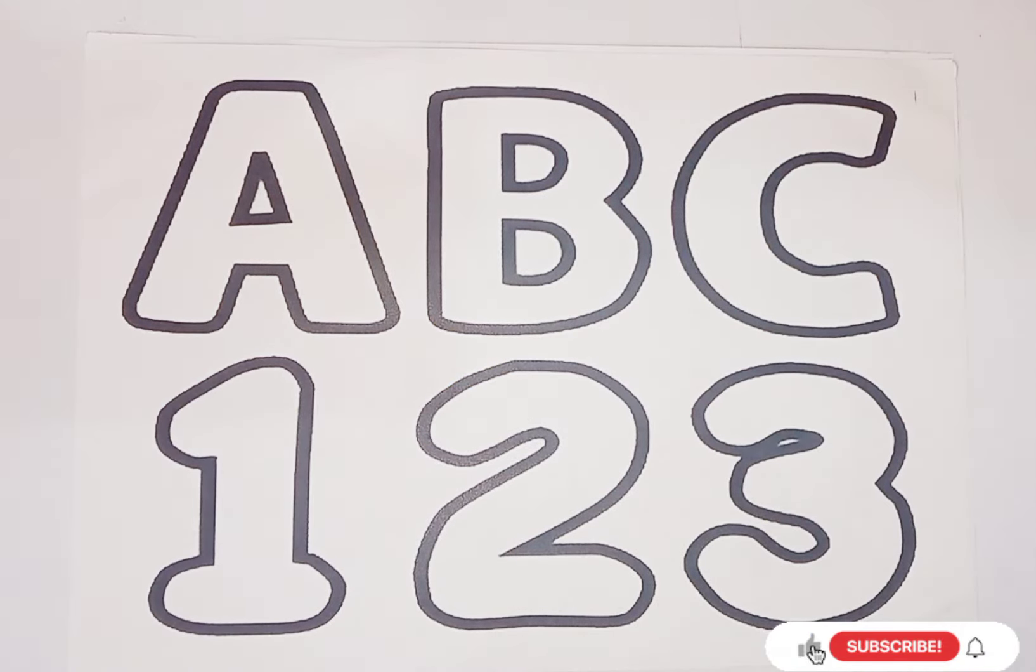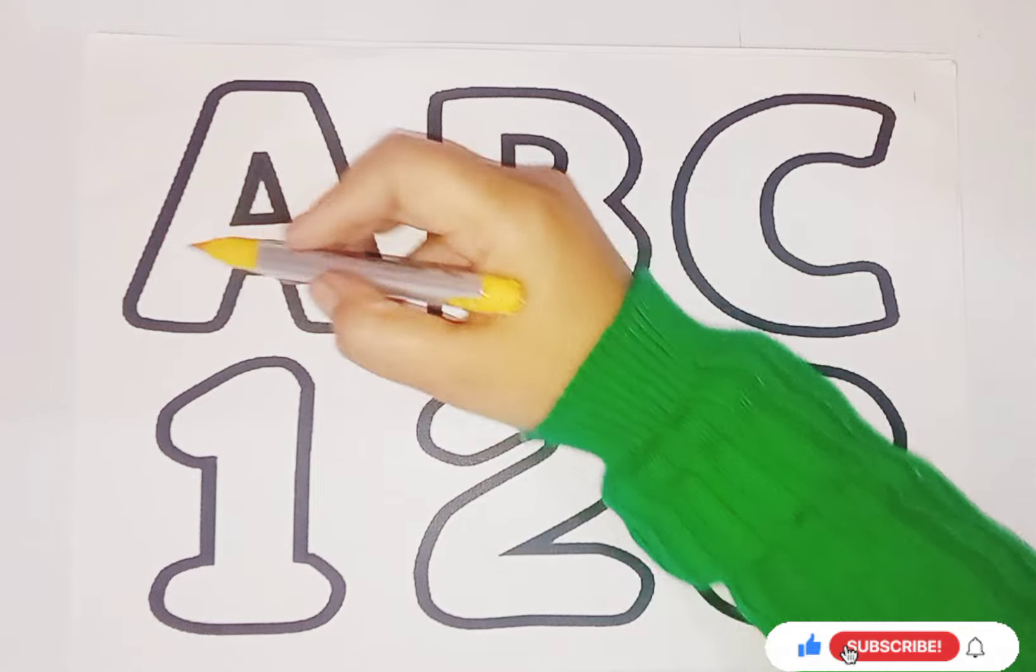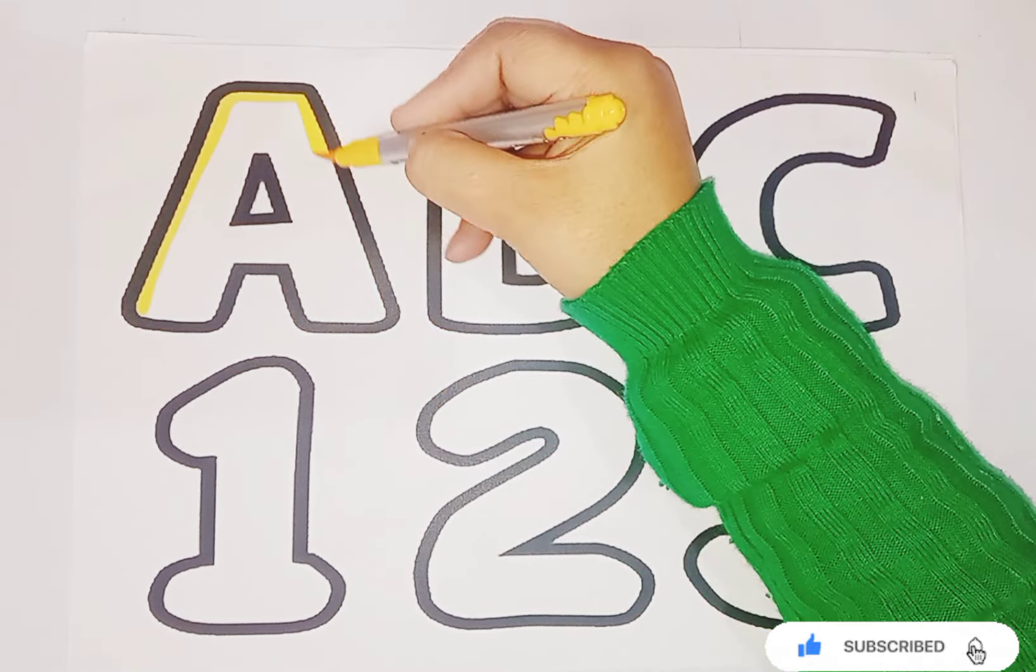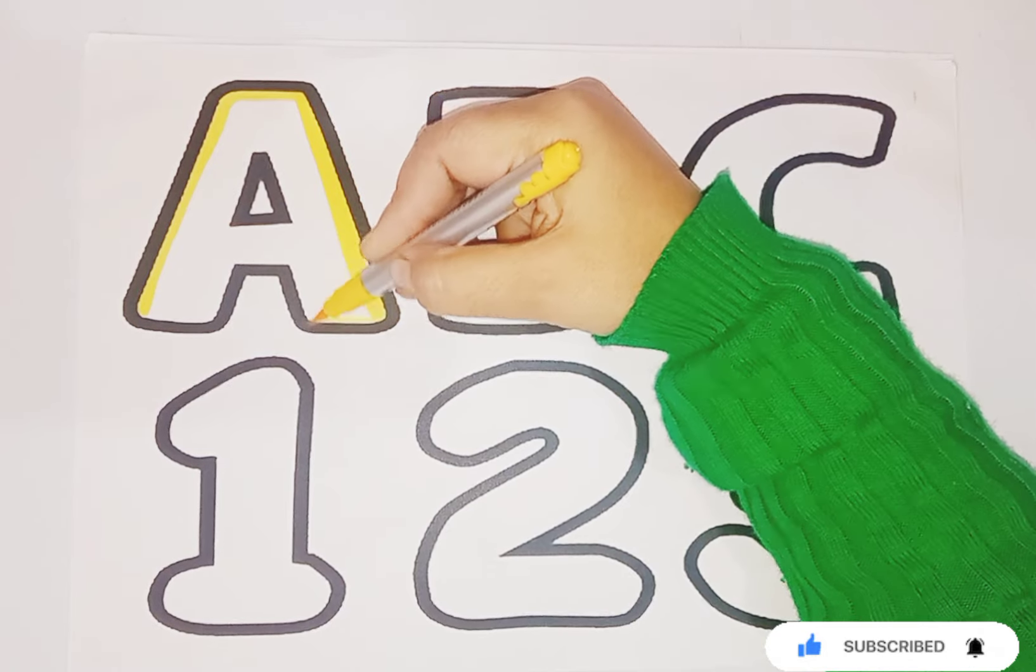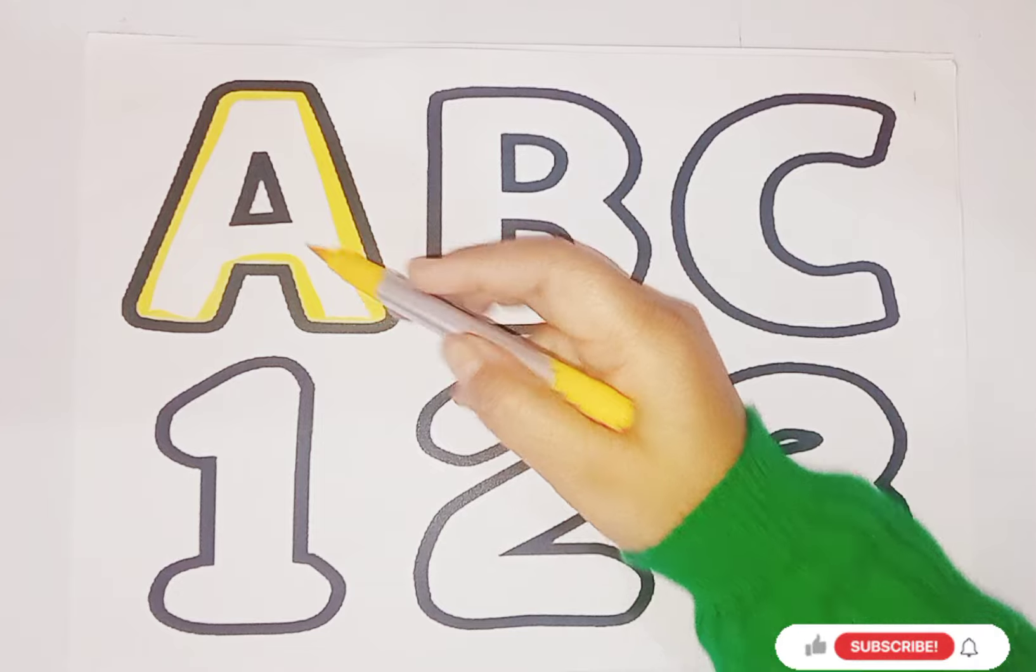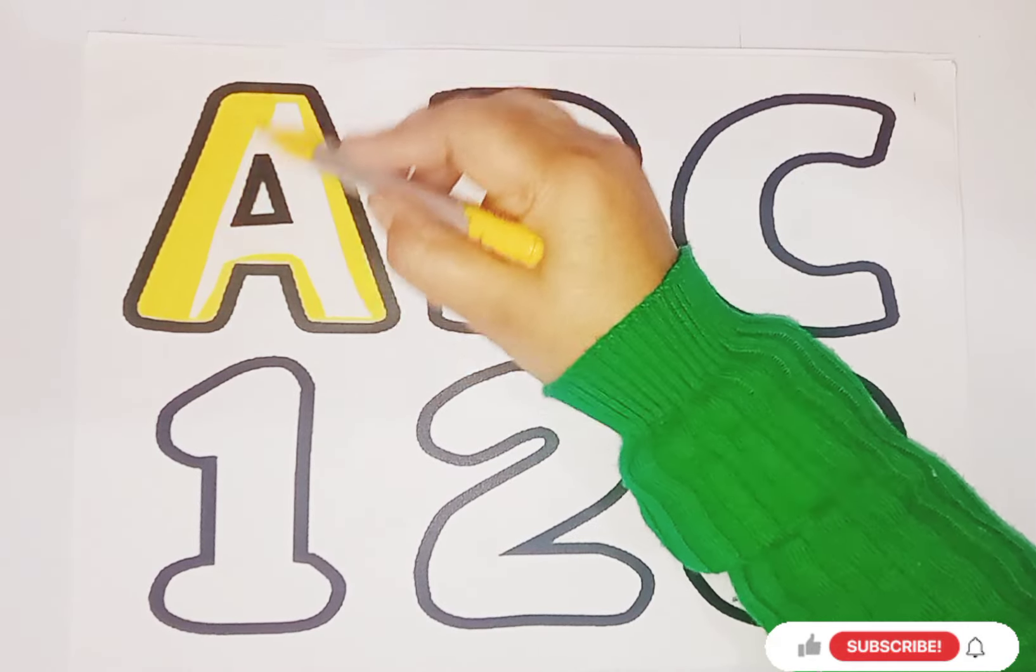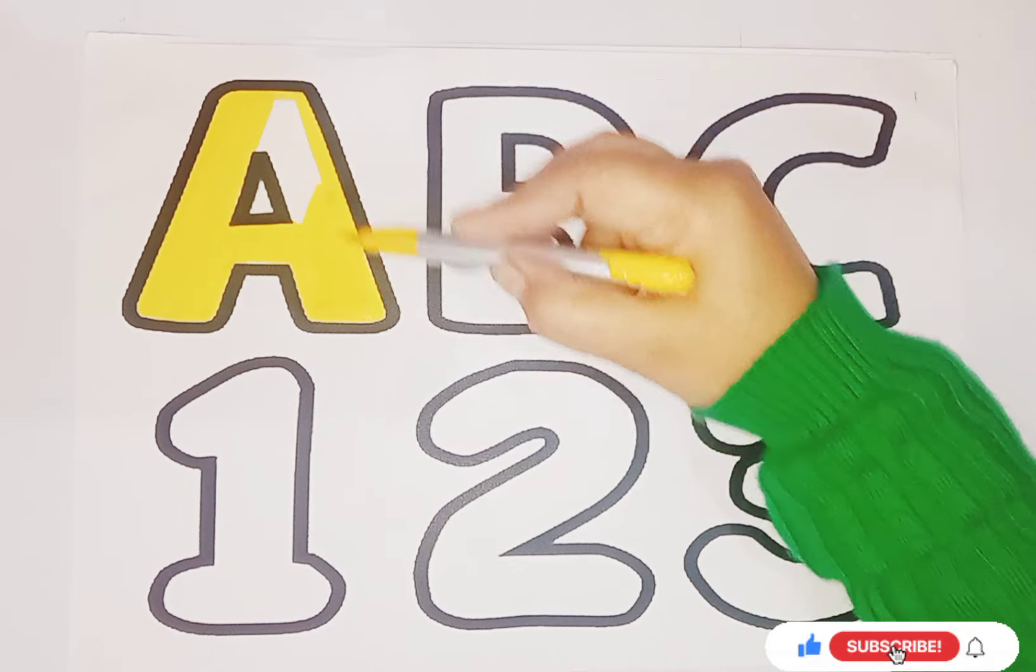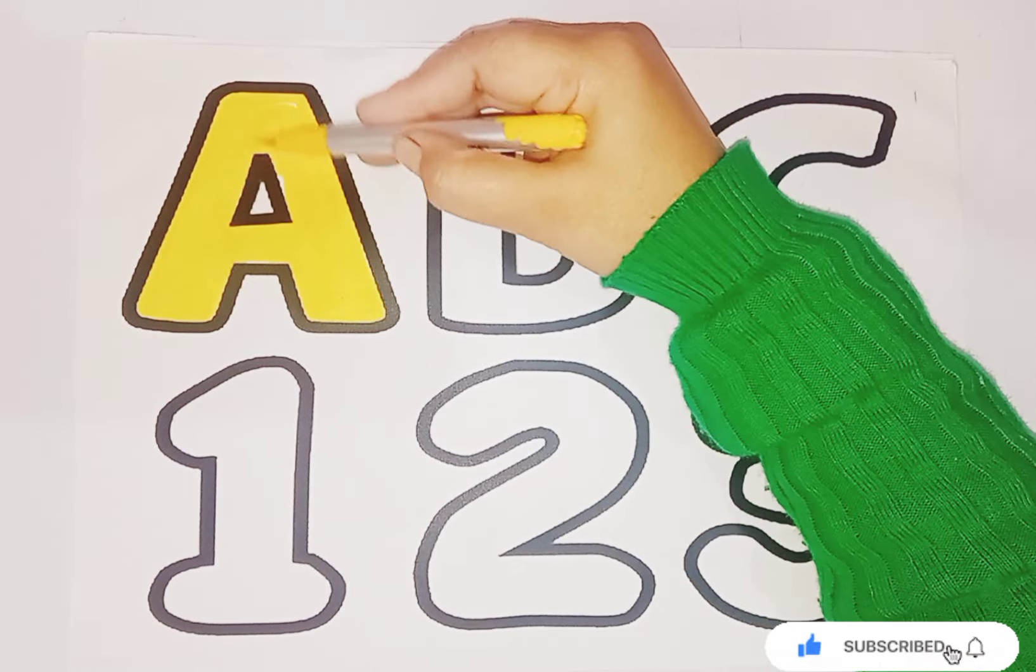This is the yellow color and alphabet A. A is for Ant. Alphabet A. Color A is yellow. This is alphabet A.